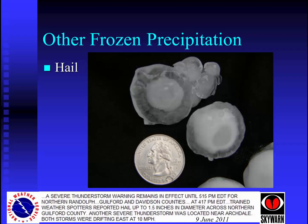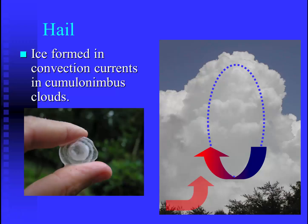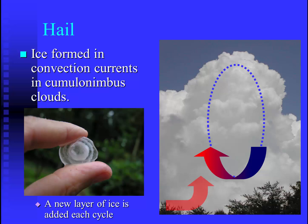There's one other form of frozen precipitation that frequently occurs in the summer, and that's hail. These are some hailstones that fell in my yard. As a trained weather spotter for the National Weather Service, I called in a report that was used in a severe weather forecast shared with others throughout our state. Hail is ice formed in the convection currents in large cumulonimbus clouds. As raindrops fall, they may get caught into the updraft and blown near the top of the cumulonimbus cloud, which may be near the tropopause. With temperatures at 60 or 70 degrees below zero, that water will freeze, and a new layer of ice will be added in each cycle through the cloud.